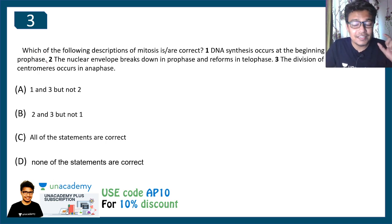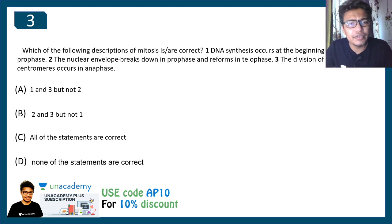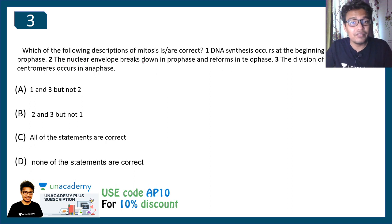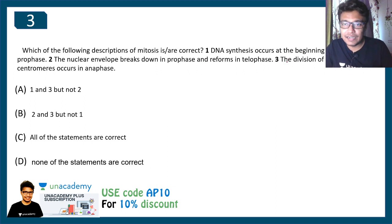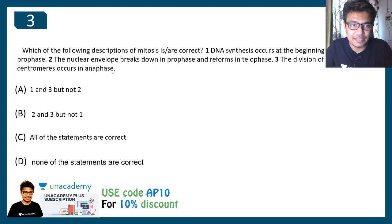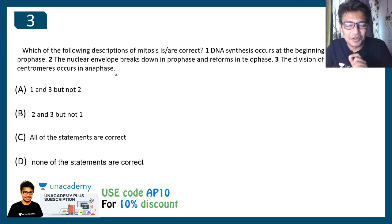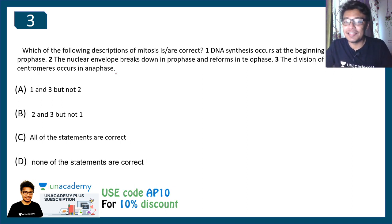Based on that, here is a sample question: which of the following descriptions of mitosis is or are correct? Statement one: DNA synthesis occurs at the beginning of prophase. Statement two: the nuclear envelope breaks down in prophase and reforms in telophase. Statement three: the division of centromeres occurs at anaphase. Try to answer in the comments — I'm not going to answer this here, but maybe in the next video.